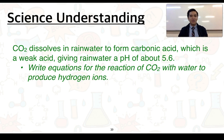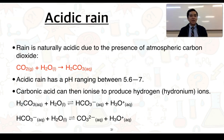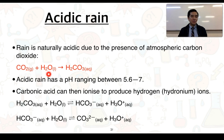Rain is naturally acidic due to the presence of atmospheric carbon dioxide. Carbon dioxide is a non-metal oxide. Non-metal oxides are acidic oxides. Acidic oxides react with water to produce an oxy acid.